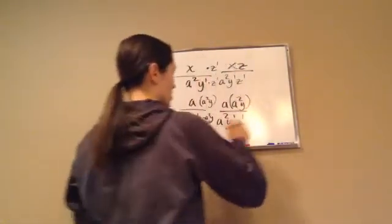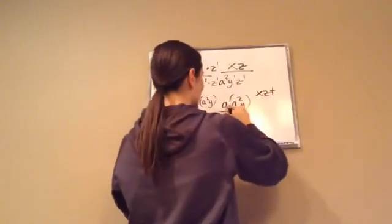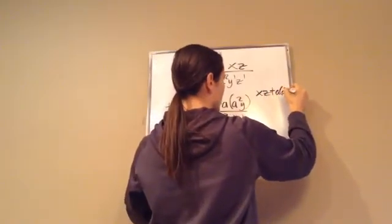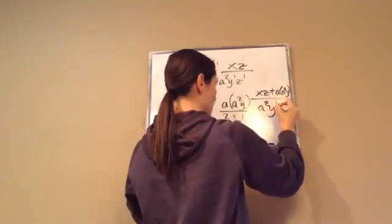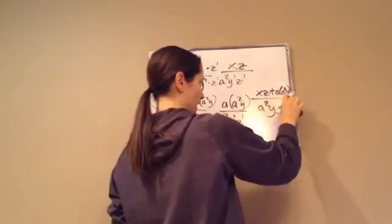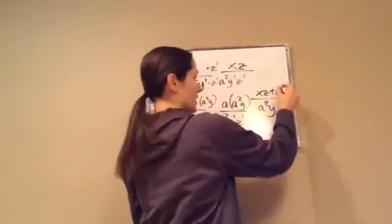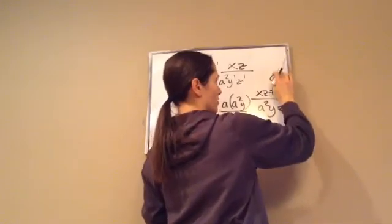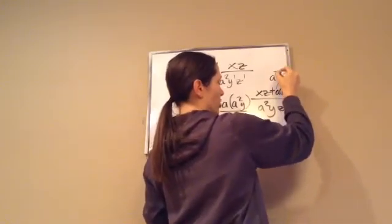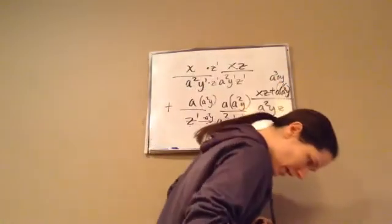Now we add our numerator, which is xz, that one right there, plus a times a squared y all over a squared yz. And at that point, if you want to take out your 1s, you can. Let me make sure we've got the right answer. Yeah. They went on and took this and went a times a squared, which would become a cubed, and then times y is ay.